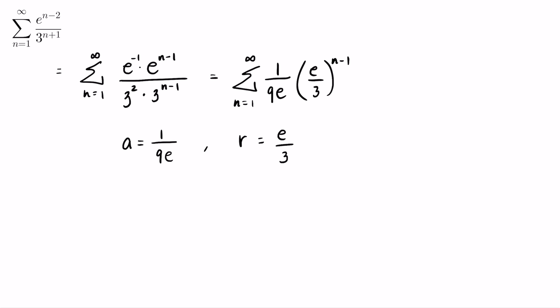The value of e is approximately 2.72. Because e is less than 3, the absolute value of R equals e over 3, which is less than 1. This implies that this geometric series is convergent.